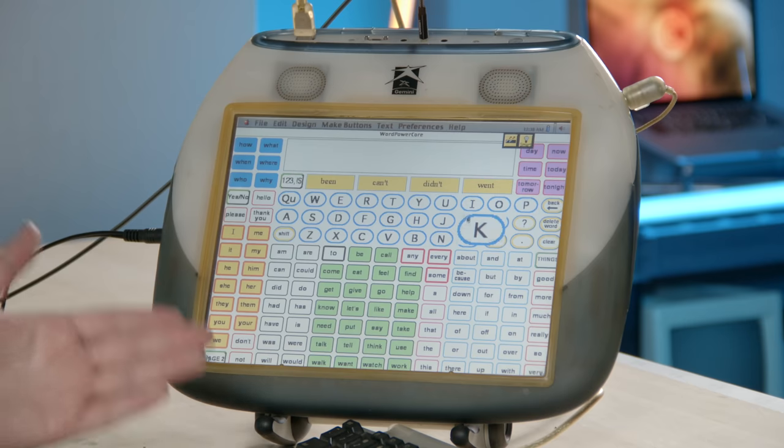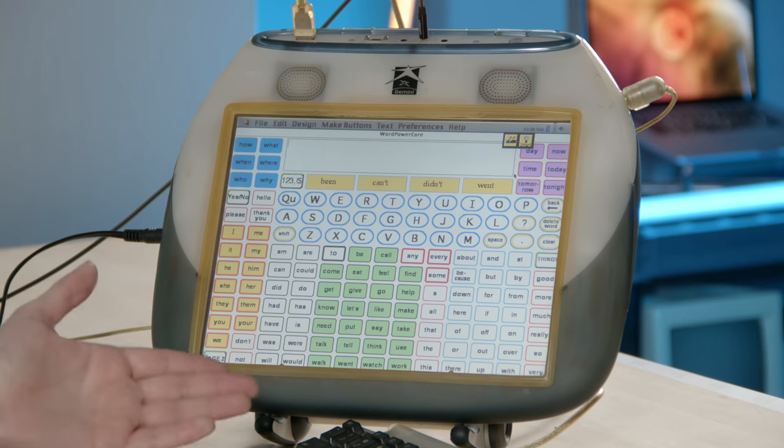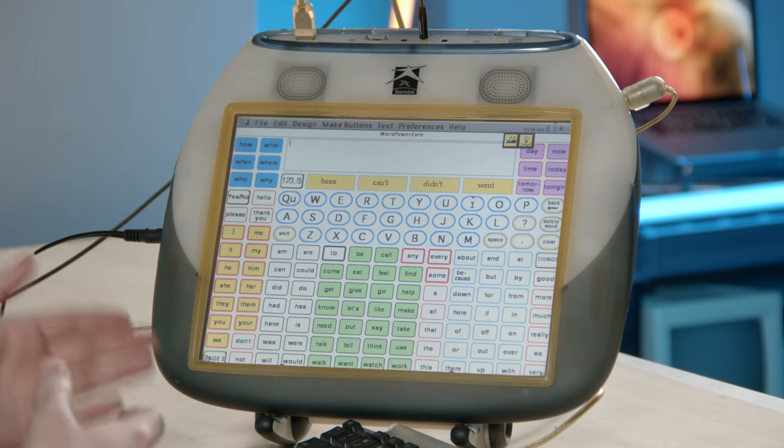So one thing I noticed is you don't actually click the buttons. Instinctively, I wanted to click the buttons to input stuff, but you actually hover over these buttons to input stuff. I'm not sure exactly why that happens. I don't know if it's just because it's one less thing to do. In terms of accessibility, if you can remove steps like clicking, that's good. Maybe it makes it easier for the switch controls to work too.